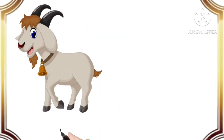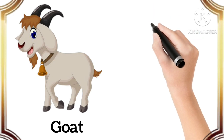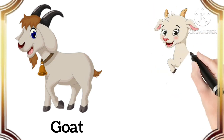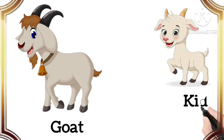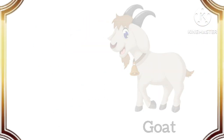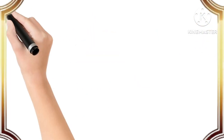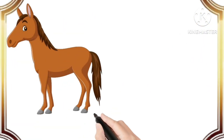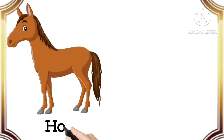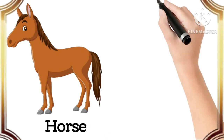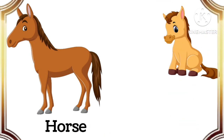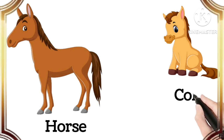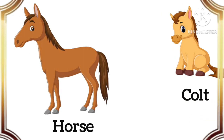Goat. The baby of goat is kid. Kid. Horse. The baby of horse is colt. Colt.